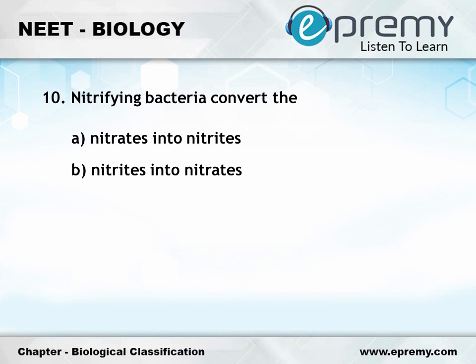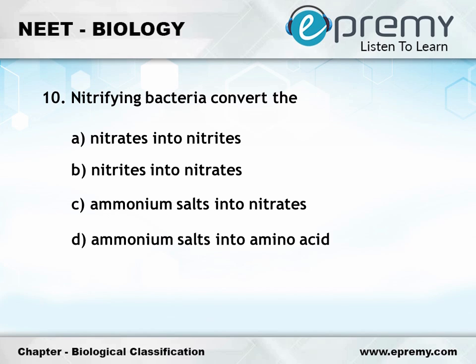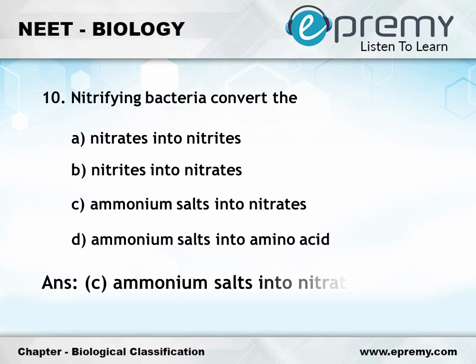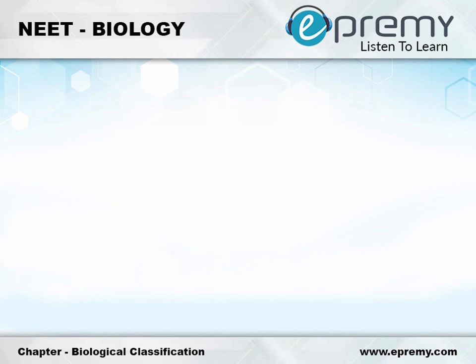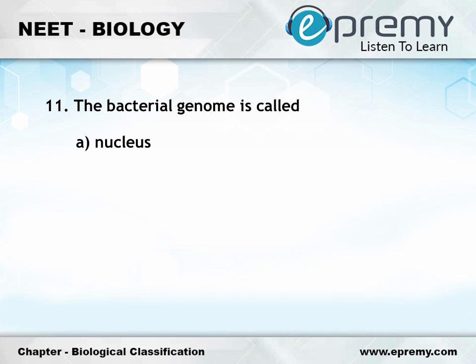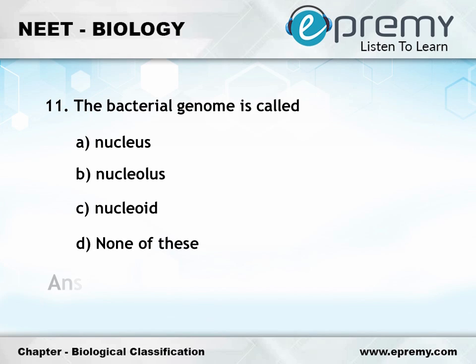Question number 10: Nitrifying bacteria converts — Option A: nitrates into nitrites; Option B: nitrites into nitrates; Option C: ammonium salts into nitrates; Option D: ammonium salt into amino acid. The answer is Option C, ammonium salts into nitrates. Question number 11: The bacterial genome is called — Option A: Nucleus; Option B: Nucleolus; Option C: Nucleoid; Option D: none of these. The answer is Option C, Nucleoid.